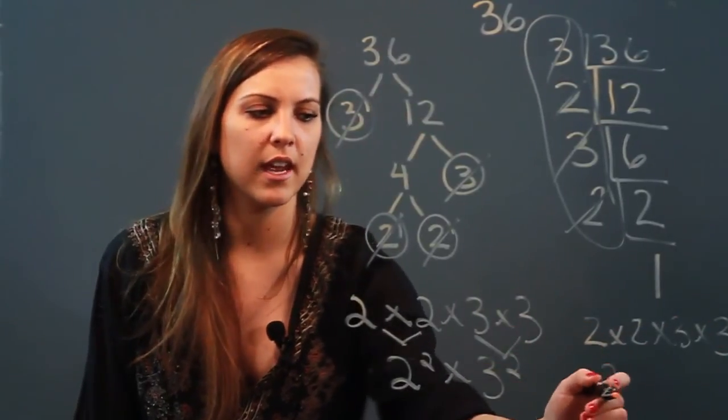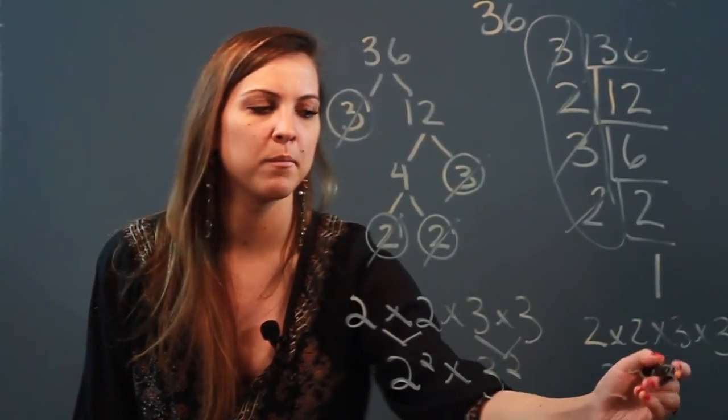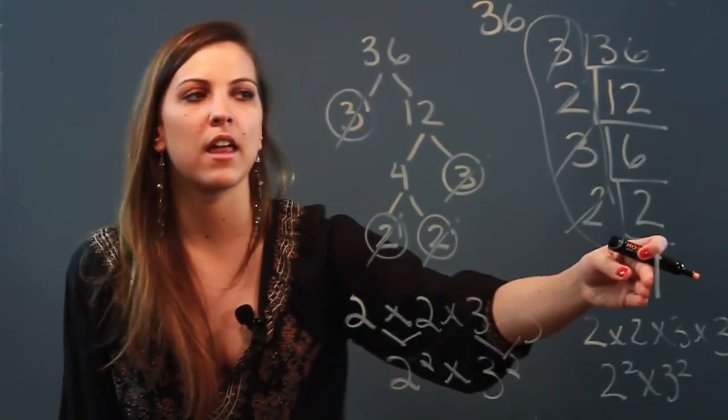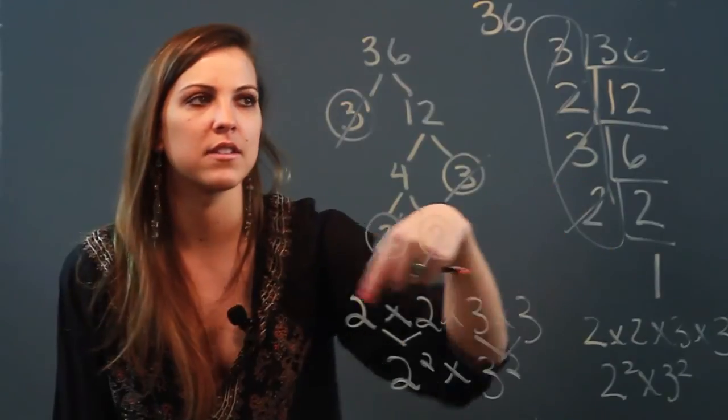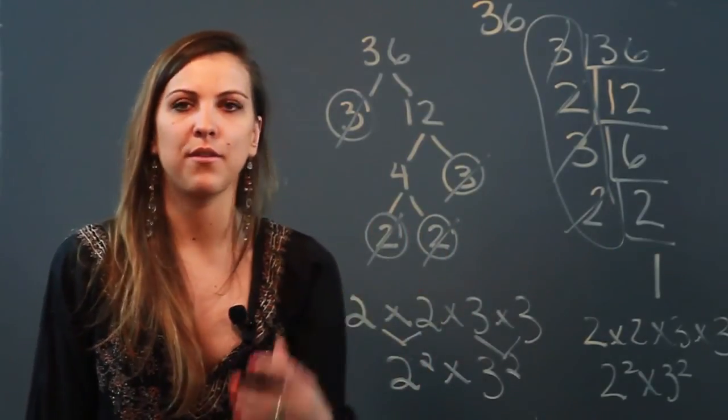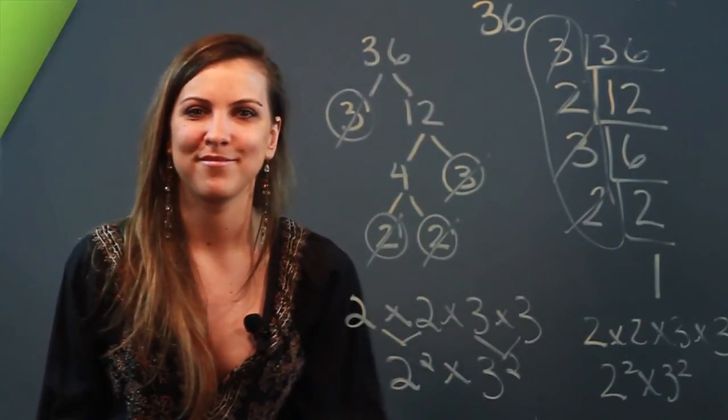I got the same answer again. I can rewrite it in exponential form, and the only thing you have to remember about the division ladder method is all the factors you pull out on the side have to be prime factors. So there's two different ways to find the prime factorization of a number.